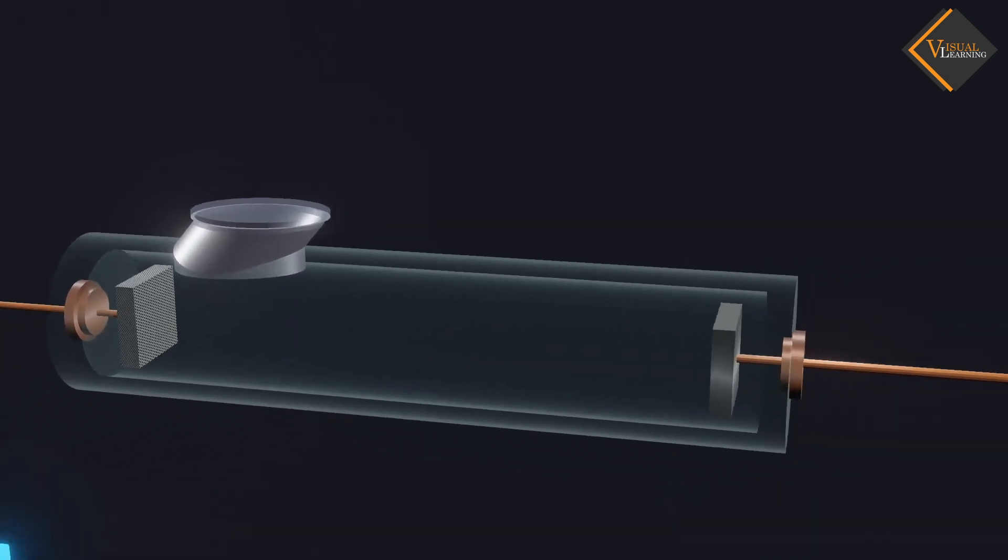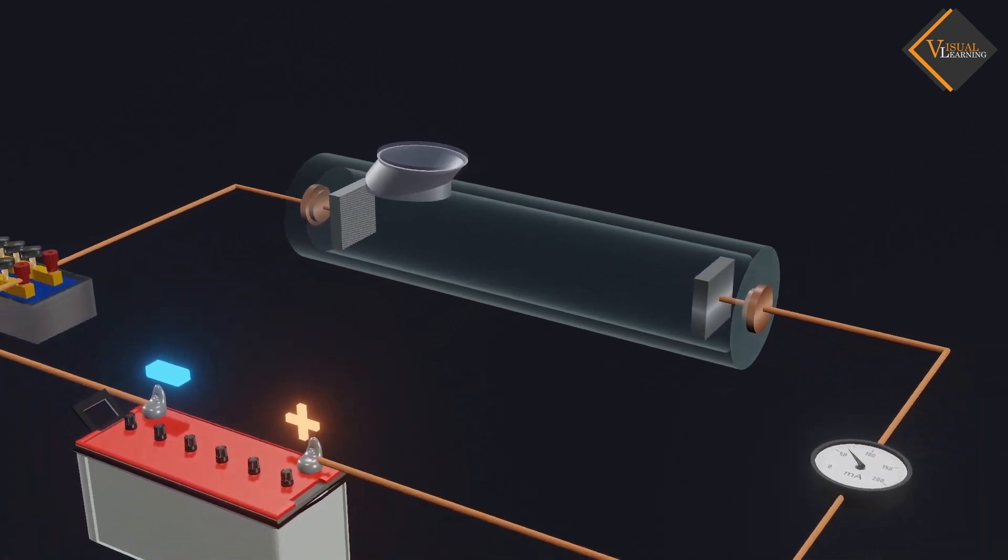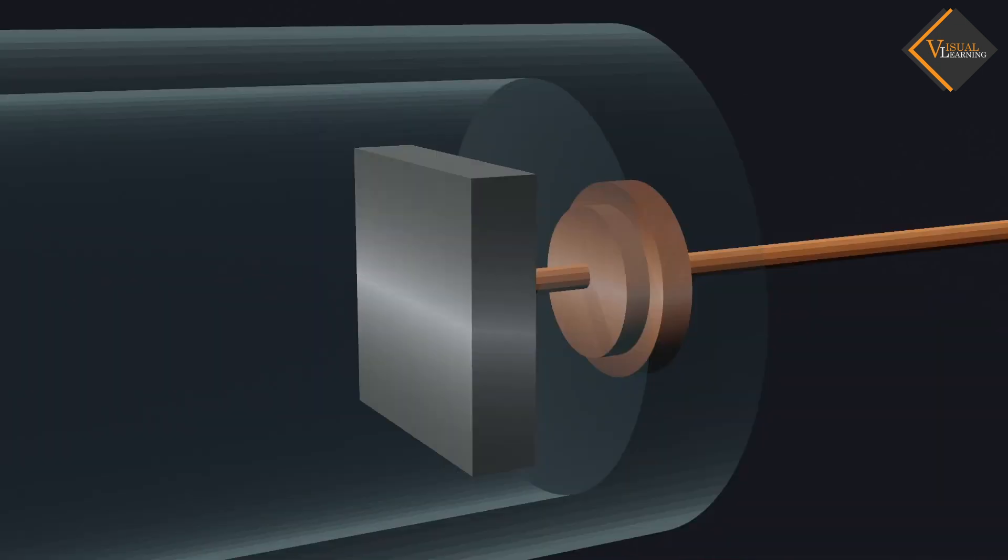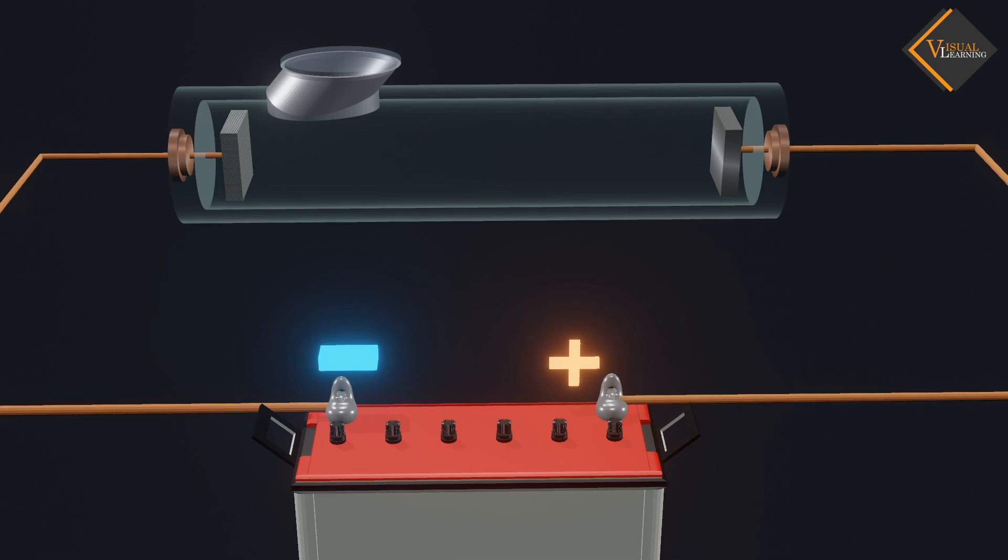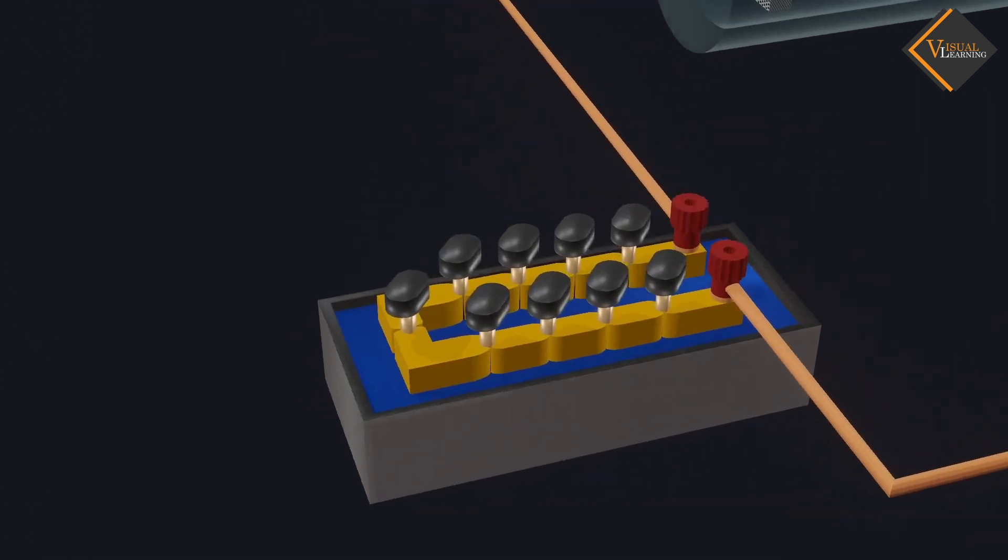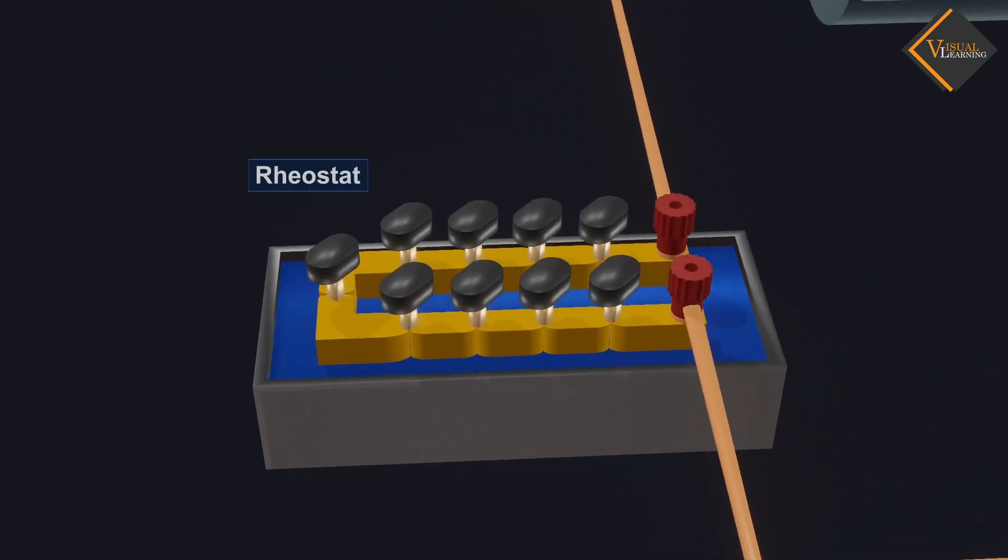The metal plate and the photosensitive plate are connected to a voltage source. The metal plate is connected to the positive terminal and the photosensitive plate is connected to the negative terminal. Desired voltage output can be taken from this voltage source.